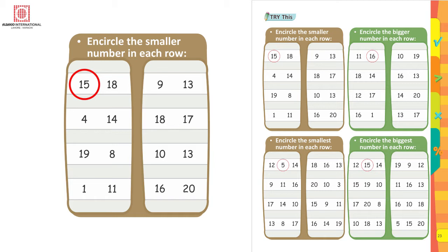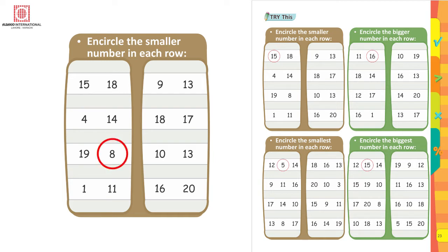15 is smaller than 18 because if you have 15 pencils and your friend has 18 pencils, who has the smaller number of pencils? Exactly, 15 is smaller and you have a smaller number of pencils. Now let's look at the next number: 4 and 14. Which one is smaller? Yes, exactly. 4 is smaller than 14. Next, 19 and 8 — two numbers given in a pair. Which one is smaller? Yes, 8 is smaller than 19.